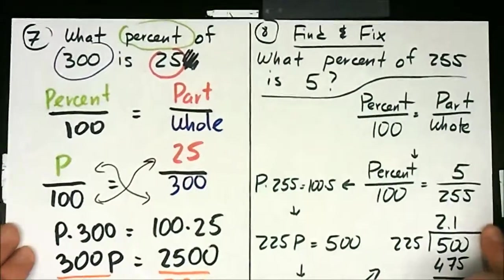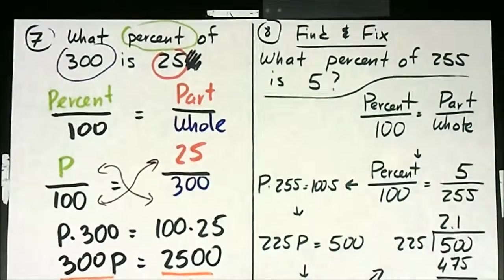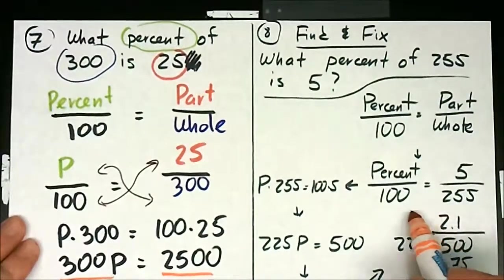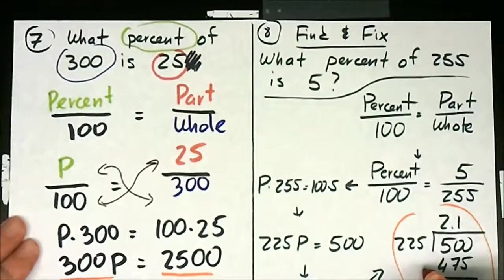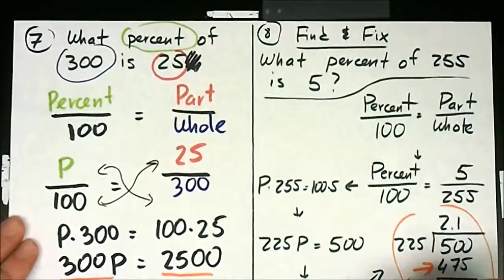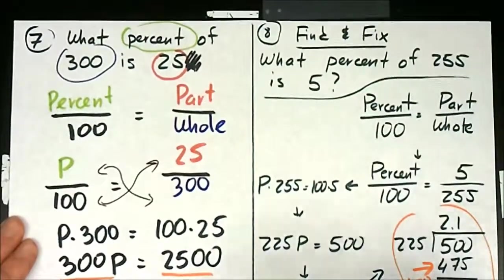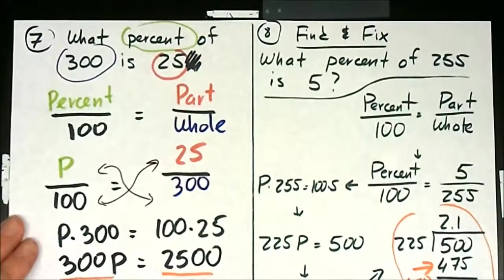Number 8 is my first find-and-fix-my-mistake problem. Where did I go wrong? My mistake is in the long division — specifically right there — because 2 times 225 is actually 450, not 475. That created the error, because with 450 I'd be left with 50, add a decimal to get 500, and that gives a completely different answer. Everything else was set up perfectly — a common mistake to make.